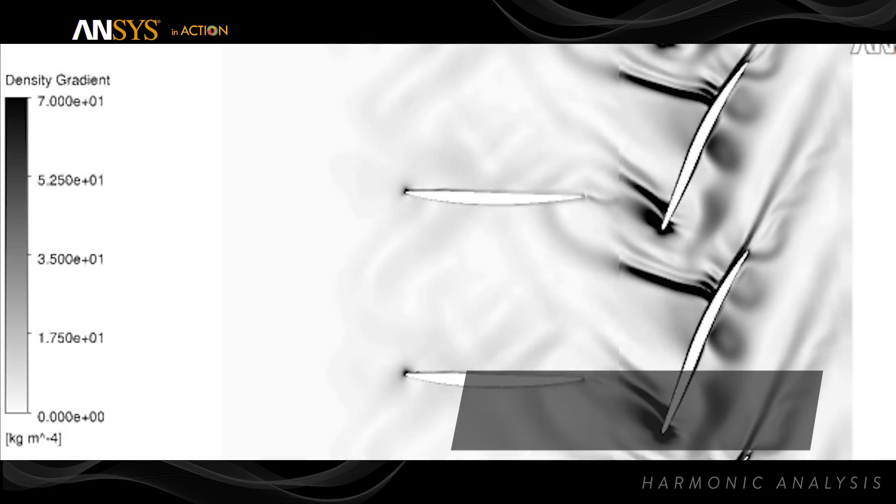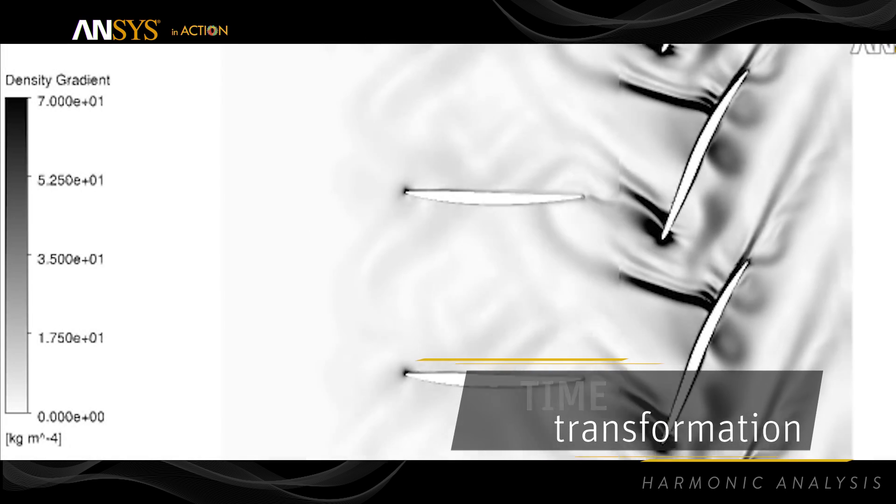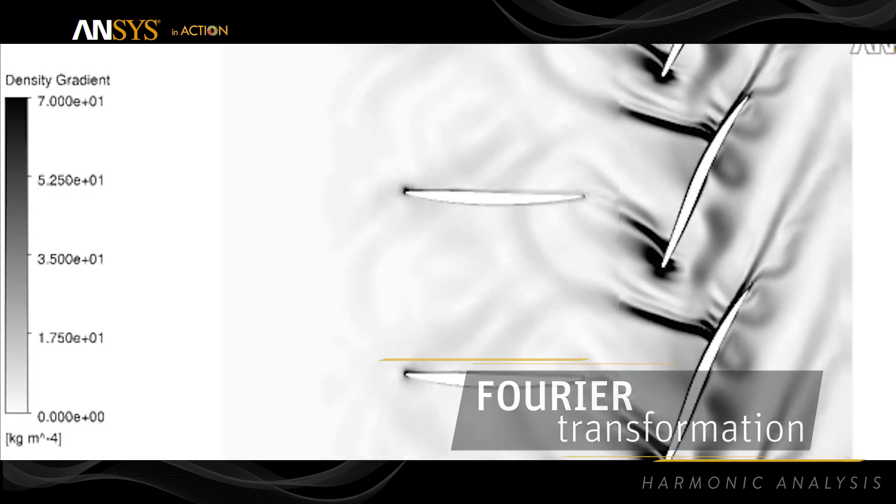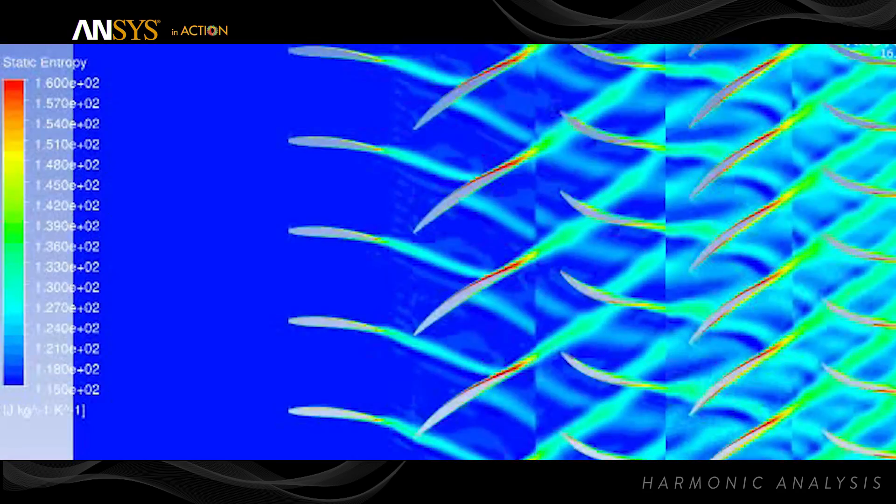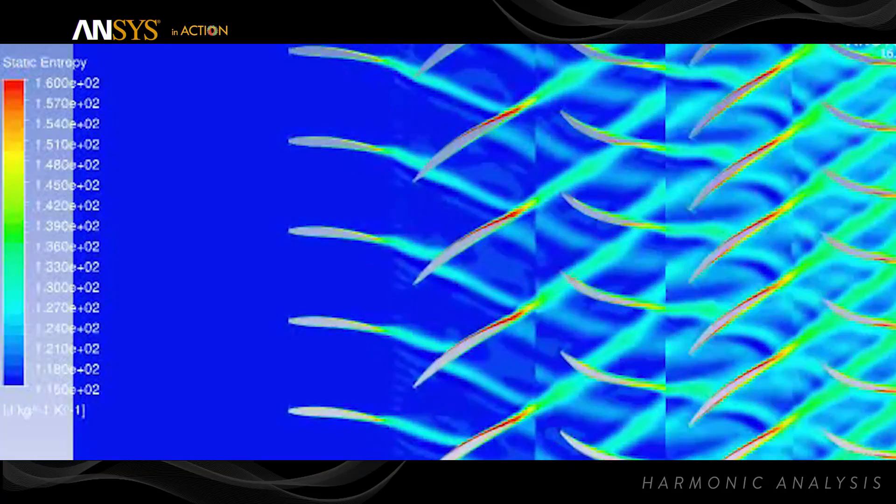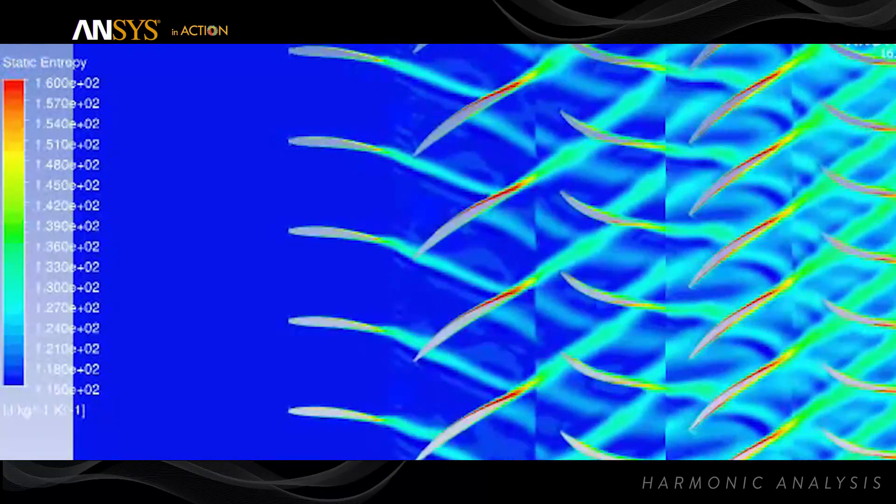A comprehensive set of transient blade row methods are already solving a wide range of turbomachinery flow problems and configurations ranging from axial to radial machines, small pitch to very large pitch variations, single row frozen gust to multi-stage simulations.